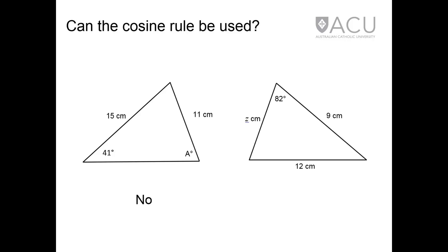In the second triangle, one of the two sides that form the angle is unknown, even though the side opposite the angle is known, so the cosine rule cannot be used. It's worth noting, however, that both of these triangles could be solved using the sine rule.